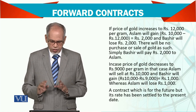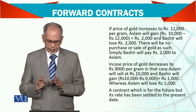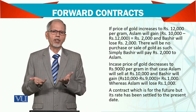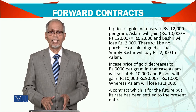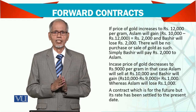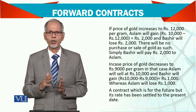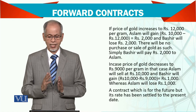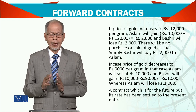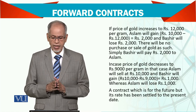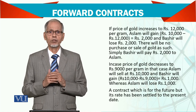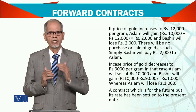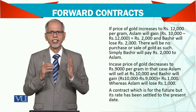So a forward contract is a contract which is for the future, but its rate has been settled to the present day. If you ask three months later what the price will be, you never know. But upfront, both parties agree: three months later, you will deliver such an amount at such a price. If price turns out higher, one party benefits; if lower, the other benefits. Two parties mutually agree on the price, quantity, and time — all these things are fixed in advance.